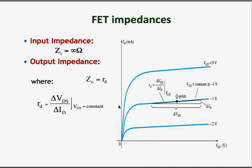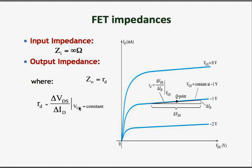The output impedance can be determined by looking at the output characteristics of the FET — the graph of drain current ID versus VDS. The output impedance is determined at the Q-point by taking the inverse of the derivative of this graph. The output impedance, or small rd, for FETs is also very big, as seen from the slope: applying a very large VDS increases drain current only very minimally. The output impedance RD is the change in VDS divided by the change in drain current ID, at a constant gate voltage.